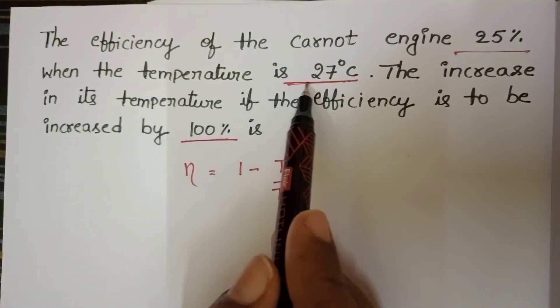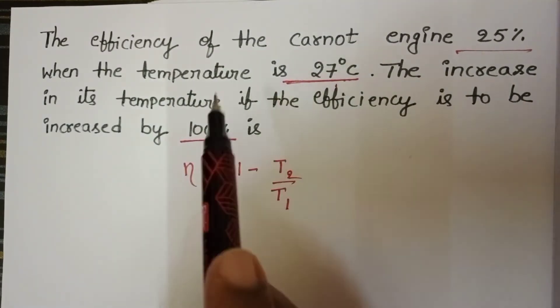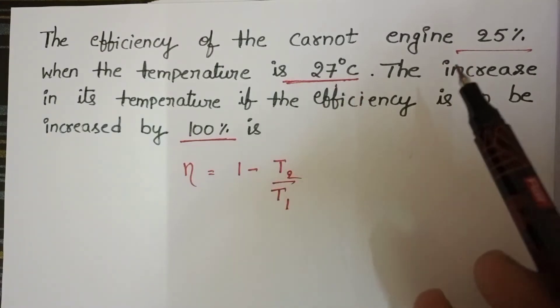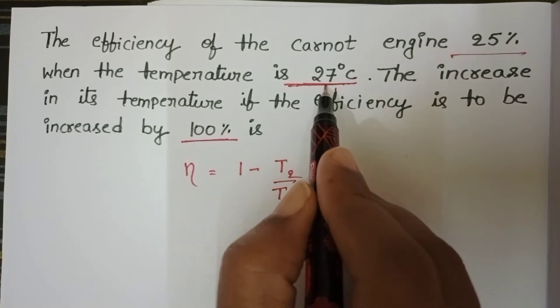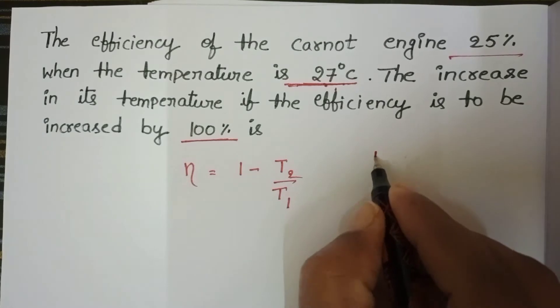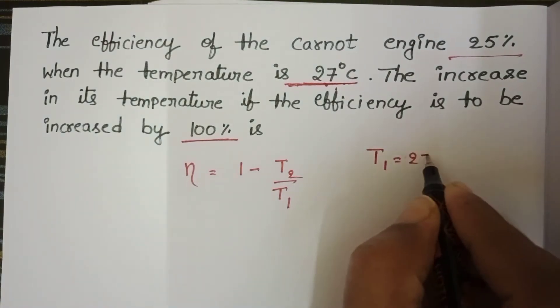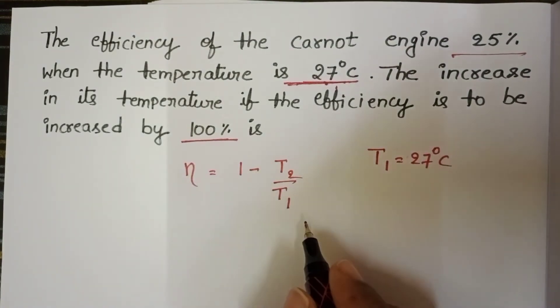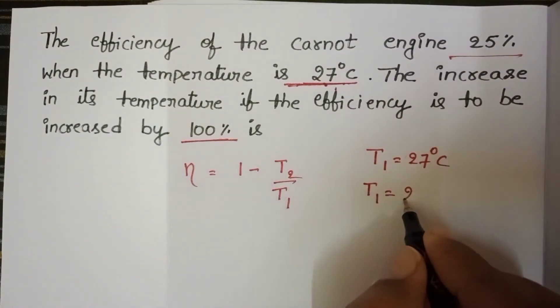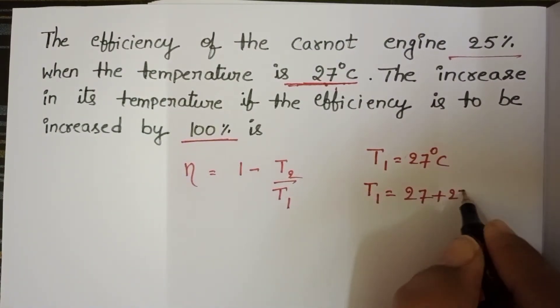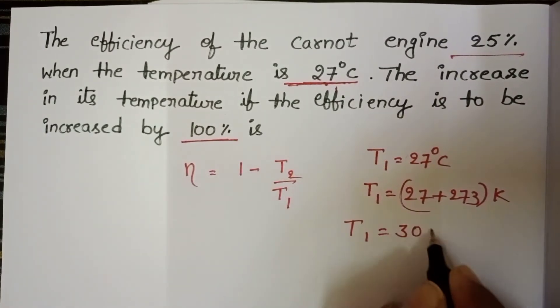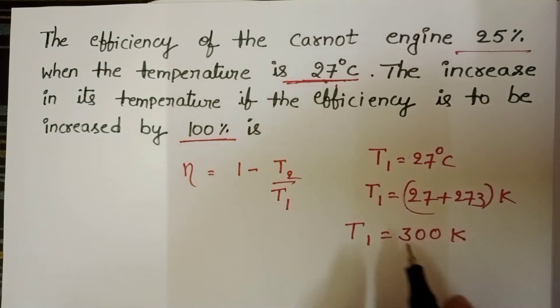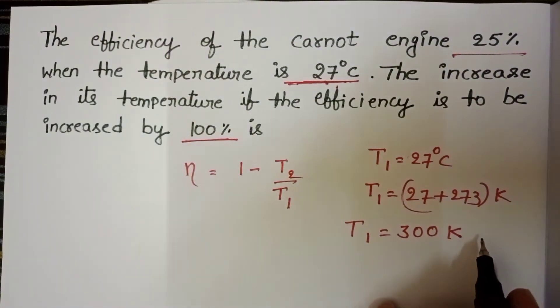In the given question, when the temperature is 27 degree centigrade, this temperature is the higher temperature, temperature of the source. So T1 equals 27 degree centigrade, convert into Kelvin: 27 plus 273. T1 equals 300 Kelvin.